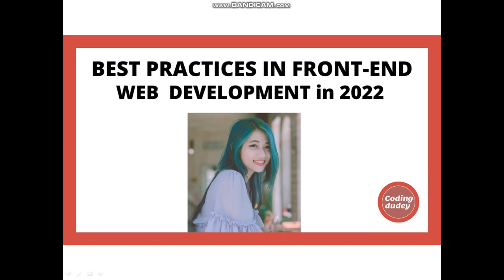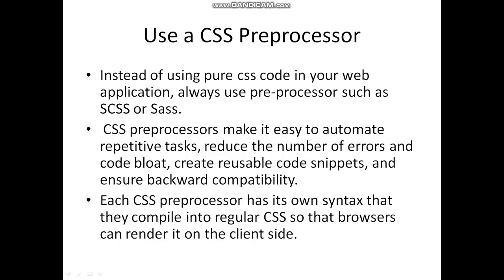The first point is to use a CSS preprocessor. Instead of using pure CSS code in your web application, always use a preprocessor such as LESS or SASS. CSS preprocessors make it easy to automate repetitive tasks, reduce the number of errors and code bloat, create reusable code snippets, and ensure backend compatibility. Each CSS preprocessor has its own syntax that compiles into regular CSS so that browsers can render it on the client side.